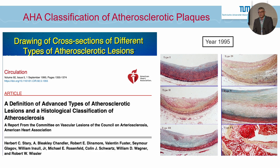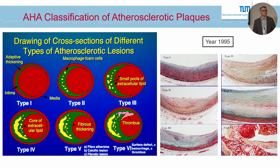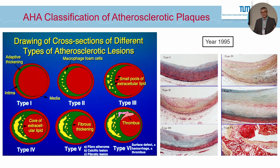So many years later — that was actually in 1995 — Stary came up with a classification in the American Heart Association, classifying types of lesions starting from early lesions to type 6 lesions. Those are the ones that show rupture, fissure, or erosion. The problem with this classification was it was not granular enough; it didn't really provide enough information on what are the risky lesions or on the underlying pathophysiology.